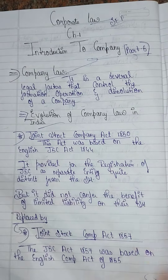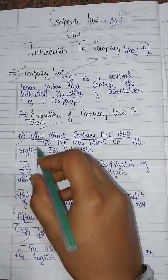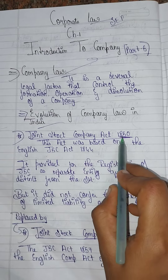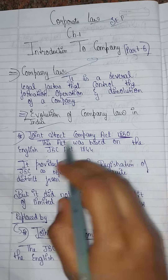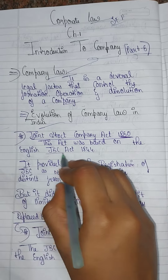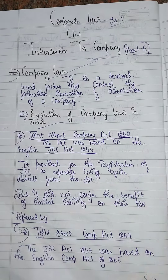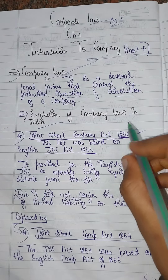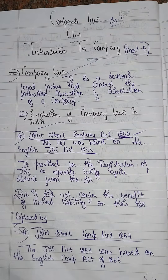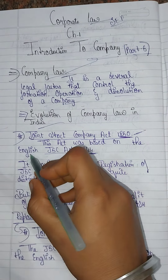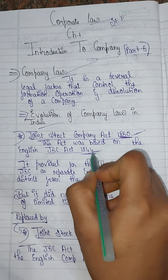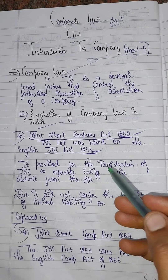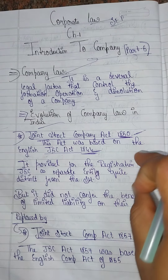Now, the evolution of company law: first, the Companies Act 1850. This act was based on the English Joint Stock Companies Act 1844. So this act of 1850 has its basis in the English act of 1844.